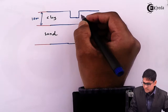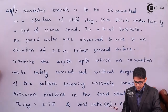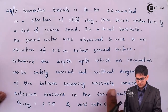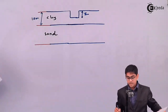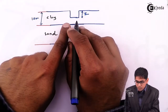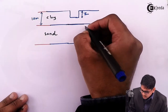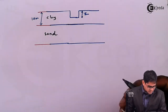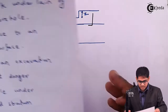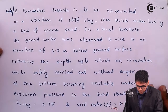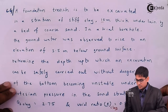The question asks how much we can safely excavate — how deep we can go without the bottom becoming unstable. The unstable bottom would indicate upward movement of water or soil. In a trial borehole, the groundwater table was observed to rise to an elevation of 3.5 meters below ground surface.